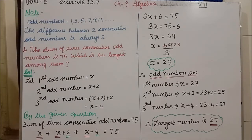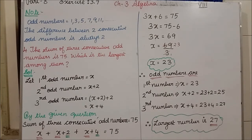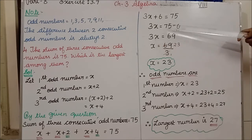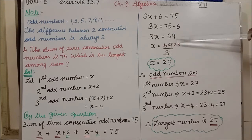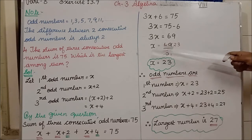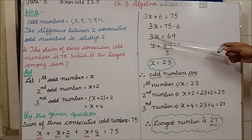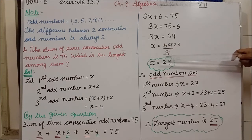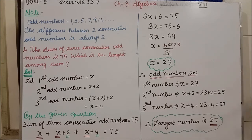We take the constant 6 to the right side, where it becomes minus 6. So 3x equals 75 minus 6, which is 69. Then x equals 69 divided by 3. Cancelling, 69 by 3 gives 23. So x equals 23.